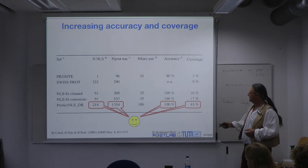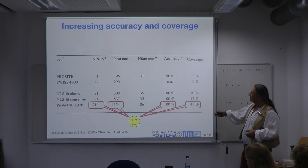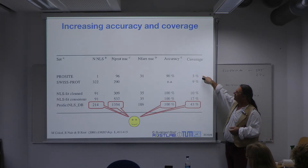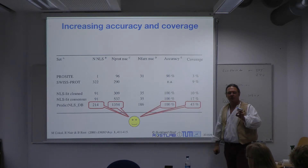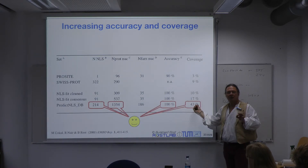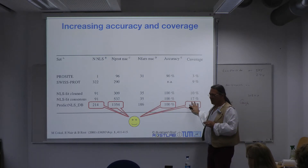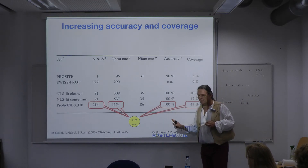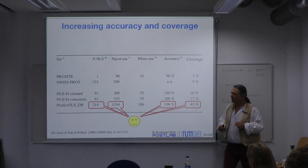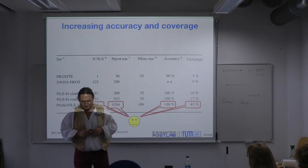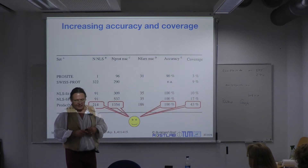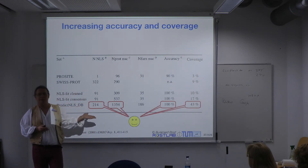That worked very well. We ended up with a clean dataset — by construction 100% accurate at the time, because we never allowed anything known to be non-nuclear into the data. The coverage was 43%, meaning we started with one ProSite motif at 3% coverage of all nuclear proteins and were now up to around 40% of the then-known nuclear proteins.